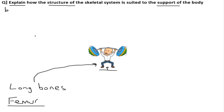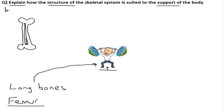Long bones are completely structurally different to flat bones in that they are hollow. You'll learn a lot more about the microstructure of a long bone for your third question where you'll have to draw a labelled diagram. Long bones have a hollow cavity all the way down the middle called the medullary cavity, and they are described as hollow.